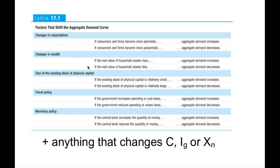Changes in wealth matter too. If people feel wealthier — for example, if the value of their retirement or stock account goes up — they may be willing to consume more of their current income, causing the aggregate demand curve to shift right. Whereas if their retirement account lost 30% of its value, as happened to many people in 2009, aggregate demand will decrease as consumers want to save more. The size of the existing capital stock also matters: firms are more likely to demand new capital if they don't have much, but if we have overbuilt factories or more roads than we need, there will be less aggregate demand. Finally, fiscal policy, covered in Unit 3, and monetary policy, covered in Unit 4, are also key factors that shift the aggregate demand curve.